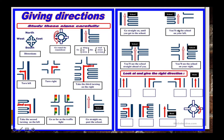Ada go straight on until you get to the school — jadi ini ada satu, dua, tiga belokan, tapi walaupun ada tiga belokan dan ada sekolah, tetap lanjut. Selanjutnya ada: you will see the school on your left. Nah, ini artinya kamu akan melihat sebuah sekolah di sebelah kiri — artinya kamu sudah melewati sebuah jalan dan sampai di sana.